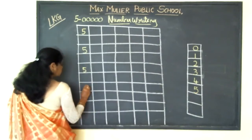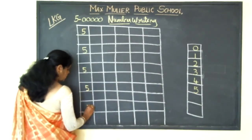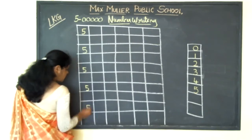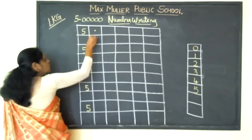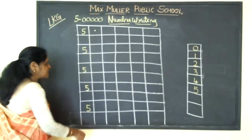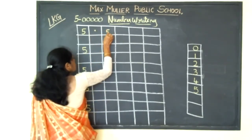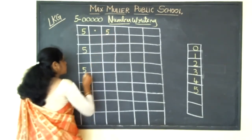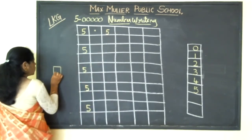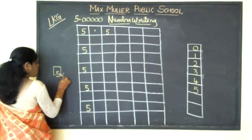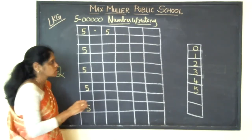Five. Five. Five. Now keep a dot over here. Don't write in this line. Let's start writing five. Five. Suppose this is the square. Don't write five like this. This is wrong.